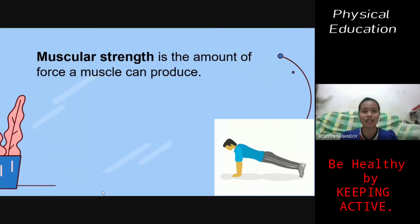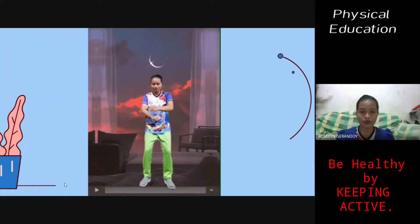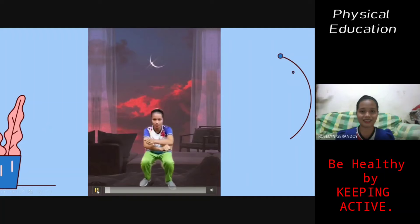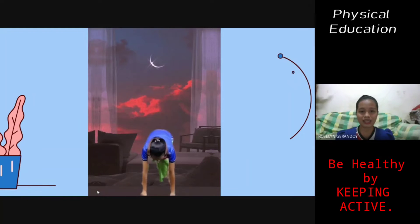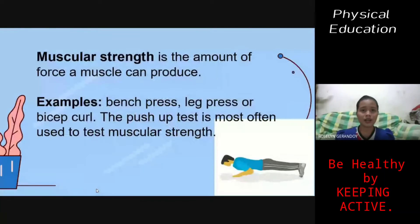Muscular strength is the amount of force a muscle can produce. Examples include the bench press, leg press, or bicep curl. The push-up test is most often used to test muscular strength. In the video, I did squatting and planking, showing that my muscles are providing force in order for me to move.